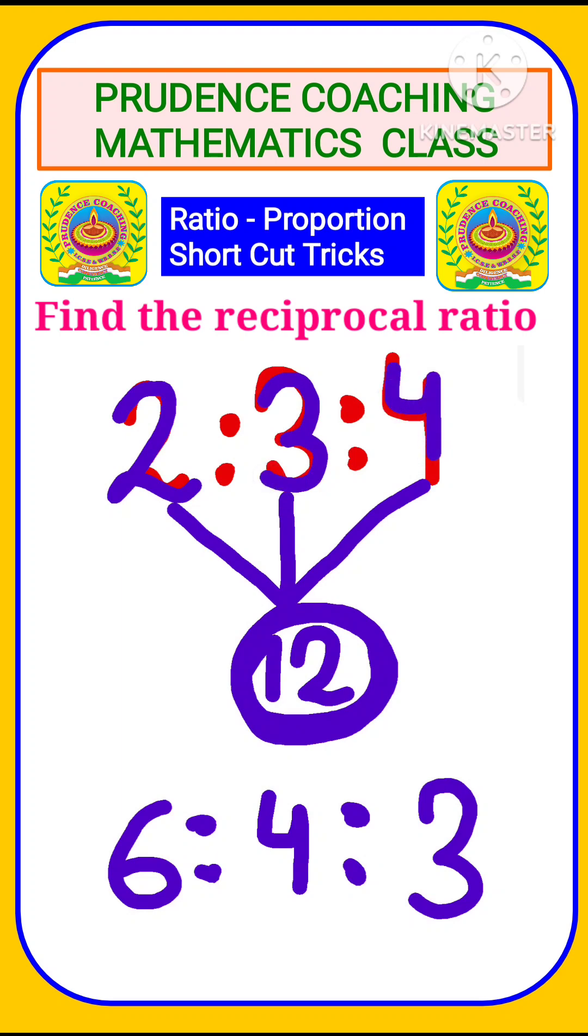4 times one number will give you 12, that is 4 times 3 equals 12. As you can see, if you multiply this one and this one and this one, every time you will get the same number. So using the options also, you can find out the answer.